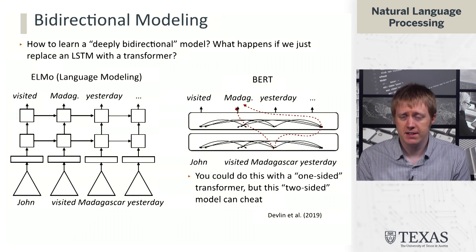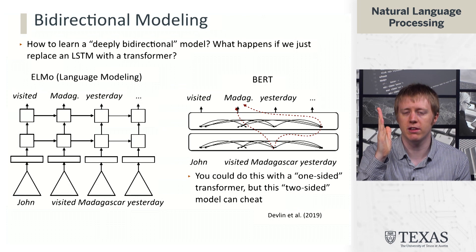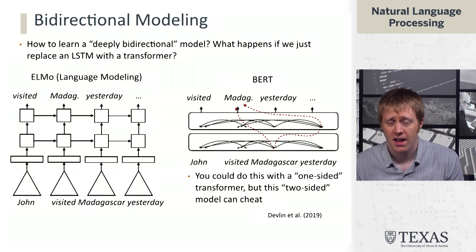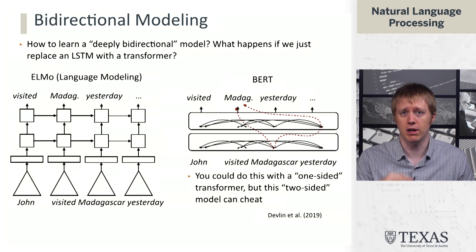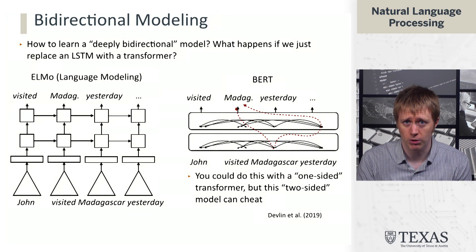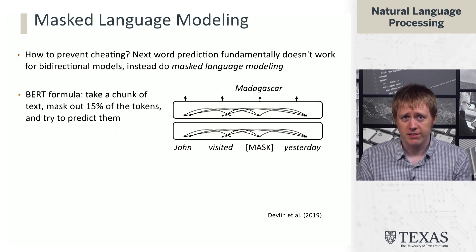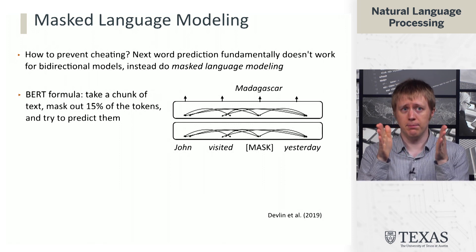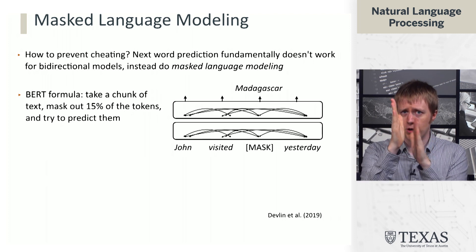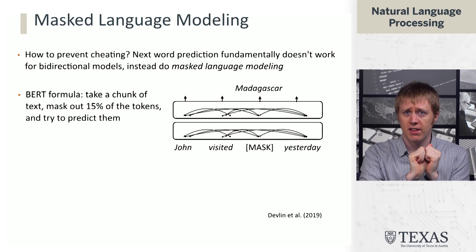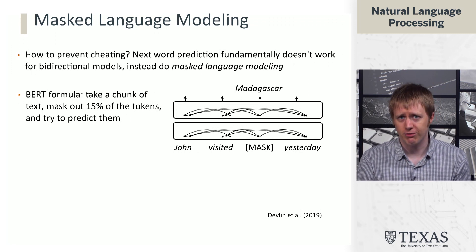GPT uses a one-sided transformer which only looks back at the past. There are ways to fix this, but that doesn't solve the problem of how we integrate information from both the past and the future to inform the representation of the current word. That's where masked language modeling comes in. In masked language modeling, rather than trying to predict every word based on what came before, instead we take a chunk of text, forget some of the words, replace them with mask tokens, and then try to predict the words that fill in those mask tokens.